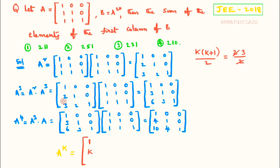For A cube, 6 is there. In place of k, if I write 3: 3 into 4 divided by 2, these cancel, and 3 times 2 is 6 — you can observe that here. Similarly, in place of k, if I write 4, I will get 10. Check: 4 into 5 divided by 2 gives 10.